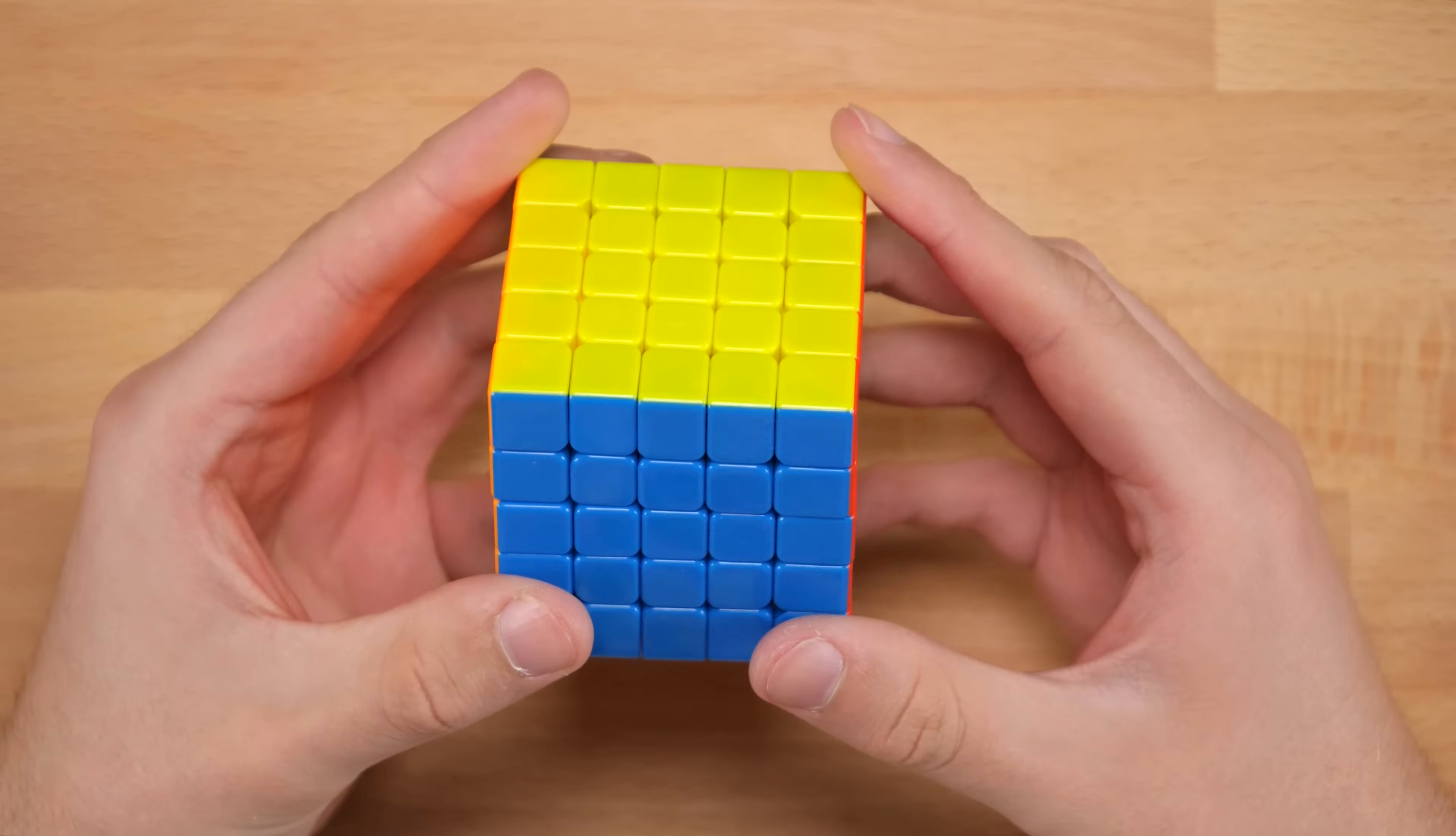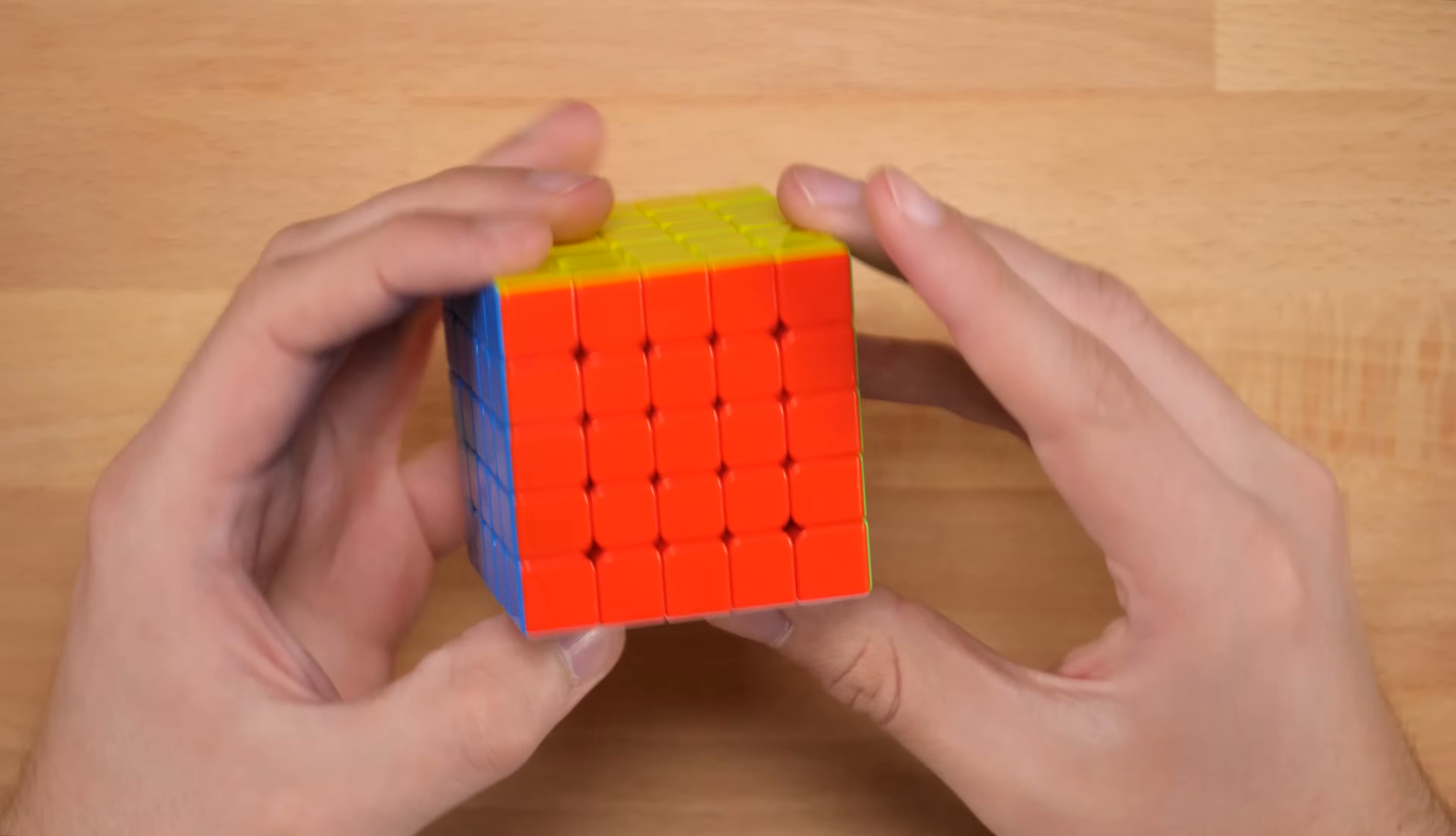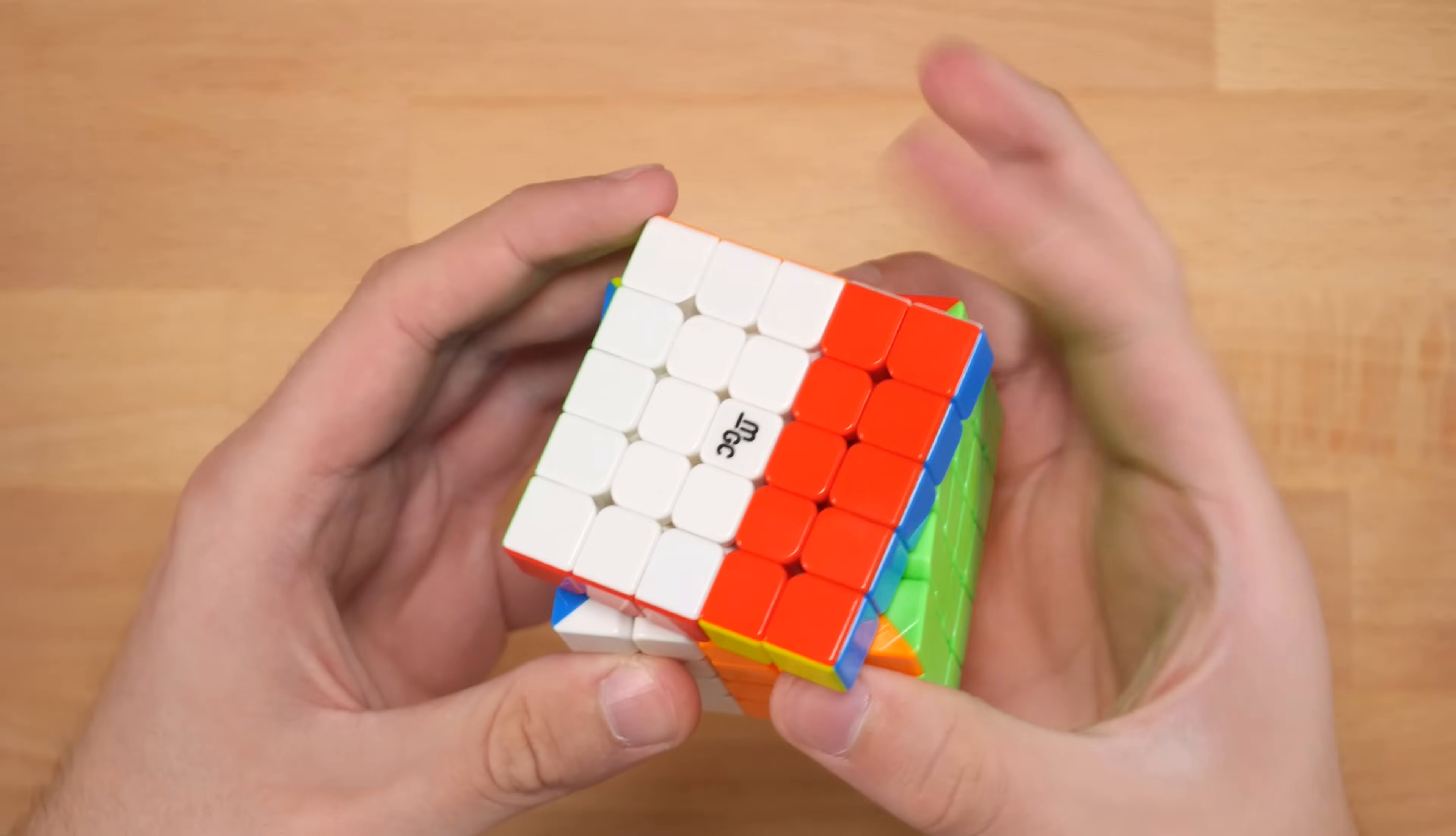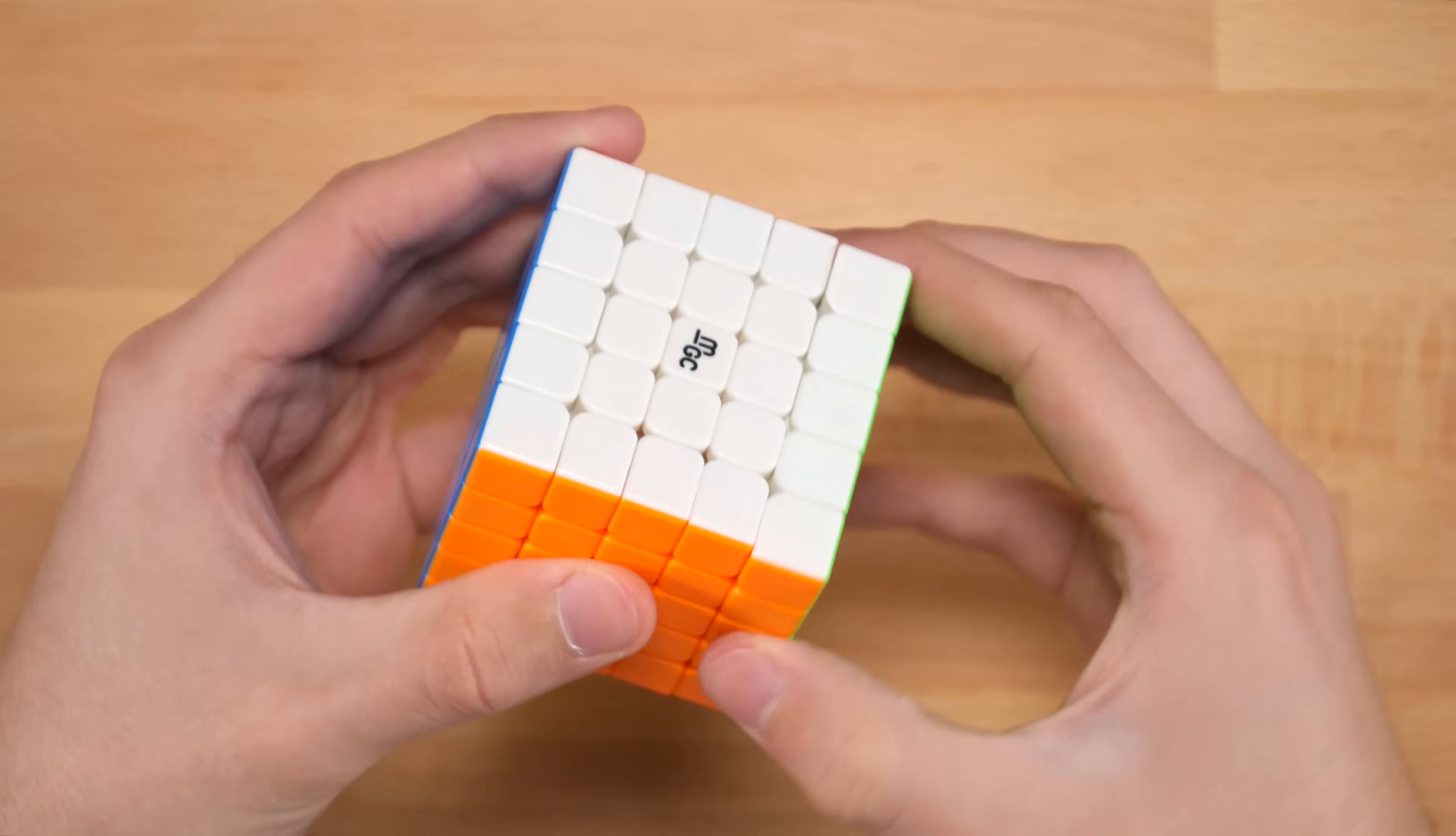So right off the bat this has a very bubbly exterior feeling. Not quite as rounded as, let's say, the Aochuang GTS, but also not quite as flat as like the Valk 5 or something. There is a little bit of roundedness to the pieces, more so on the inside than on the very edges. But yeah, let's go ahead and do some turns. Wow, okay, not too bad right out of the box. Definitely a little bit catchy maybe. I don't know, it might just be breaking in. It feels really fast. It's also very quiet and it has a very nice feel. It feels really stable.